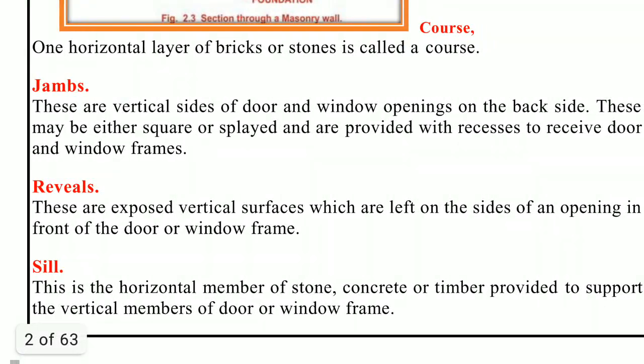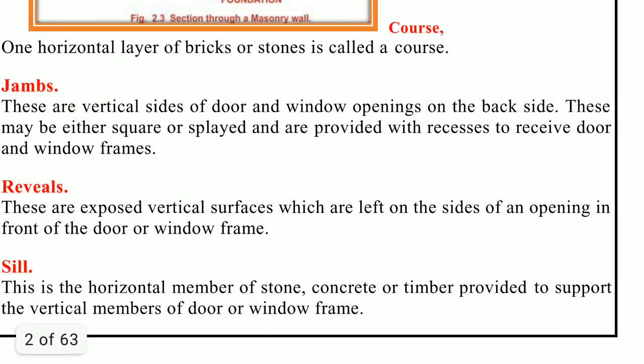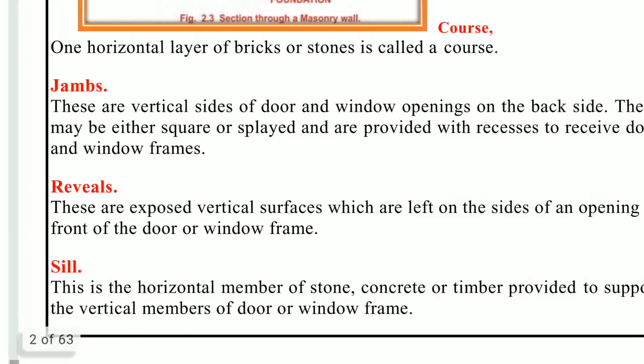Next, through stone. In stone masonry, stones at regular intervals are placed right across the wall. Such stones are known as through stones — T-H-R-O-U-G-H — or bond stones. If the wall is considerably thick, then two through stones with an overlap are provided.